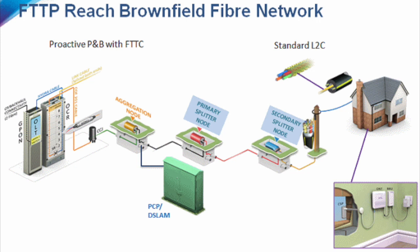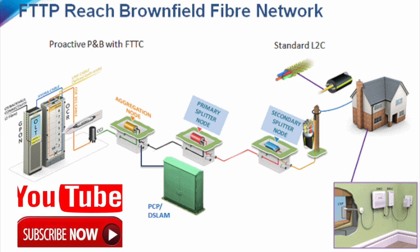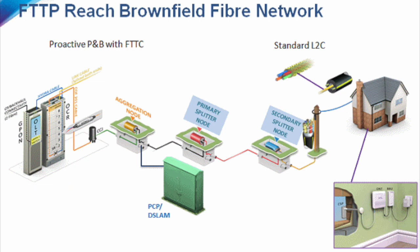I wanted to give you a quick update on what fiber to the premises looks like inside the UK. I found this schematic which shows an idea from the exchange where the fiber optic node is generated out to the aggregation node and then finally split off either to a roadside cabinet box, the green box, or off to the premises. You can see here that it goes through a variety of different splitters and finally gets put through to the house.